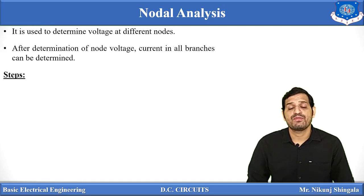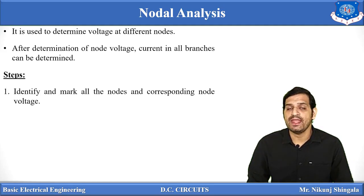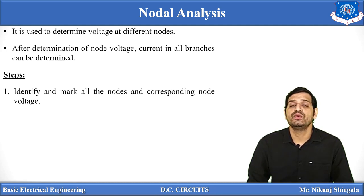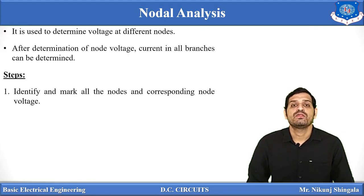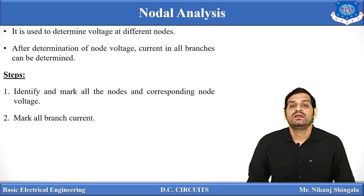Let us see which are the steps for nodal analysis of a circuit. Step one: identify all the nodes in the given network, mark all the nodes, and assign corresponding node voltage names — V1, V2, V3 and so on. First task is to identify the nodes and assign names to them. Then mark all the branch currents.